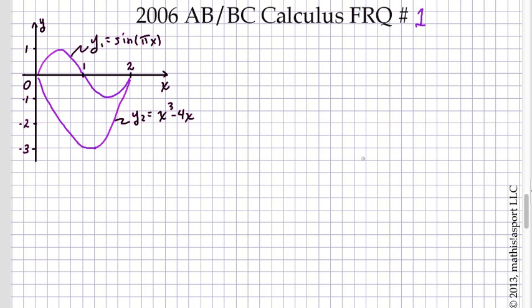In this problem we have two curves, and we're first asked to find the area between the two curves. Looking at the definition of the curves, I'm going to call curve y1 the one that is sine of pi x. That should be easy to identify because it's the one that's sinusoidal in shape. And so the other curve, y2, must be this lower curve that's given in the drawing, x cubed minus 4x.